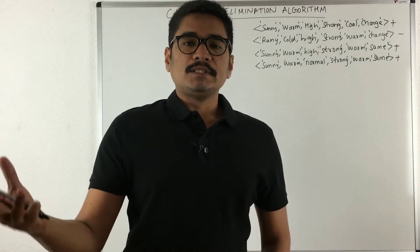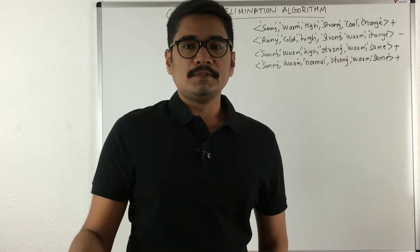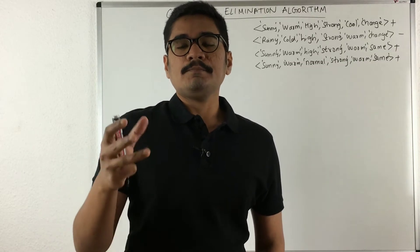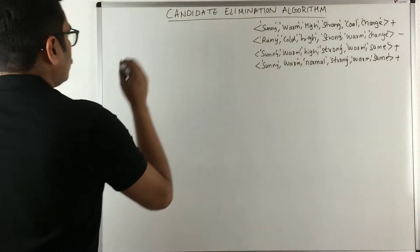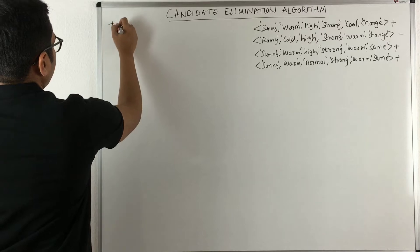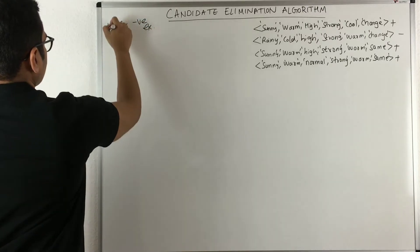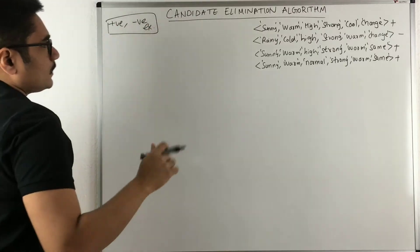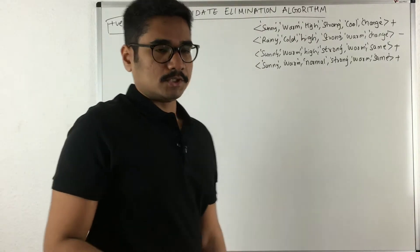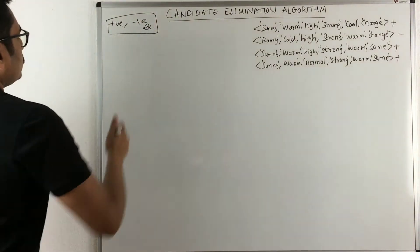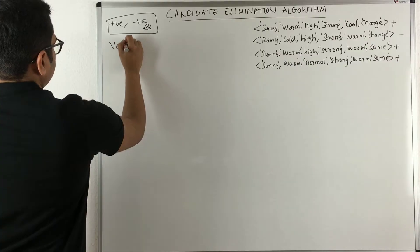When we considered the Find-S algorithm, it considered only the positive examples and did not consider any negative examples. Candidate elimination will consider both positive and negative examples — this is the key point to keep in mind. The second key concept is something called the version space.